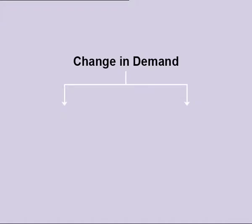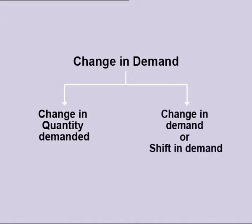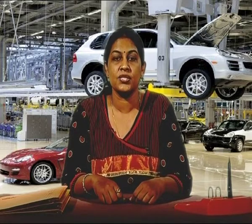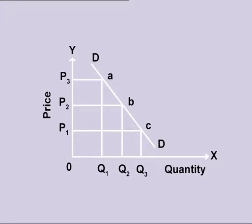Change in Demand. Demand can change because of any of the six influencing factors. Accordingly, these changes can be categorized into two types: change in quantity demanded, and change in demand or shift in demand. Change in Quantity Demanded: when demand changes because of a change in price keeping other variables constant, it is termed as change in quantity demanded. Here, the demand moves along the same curve. With an increase in price, when quantity demanded decreases, the point on the demand curve moves upward and is termed as contraction of demand. Similarly, with a decrease in price, when quantity demanded increases, the point on the curve moves downward, which is termed as expansion of demand.